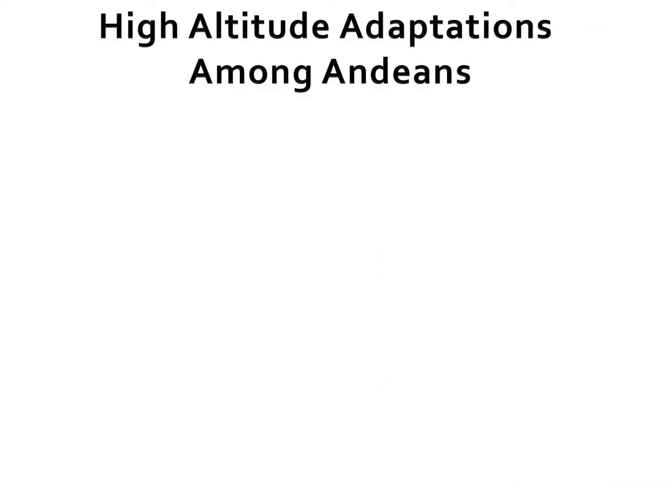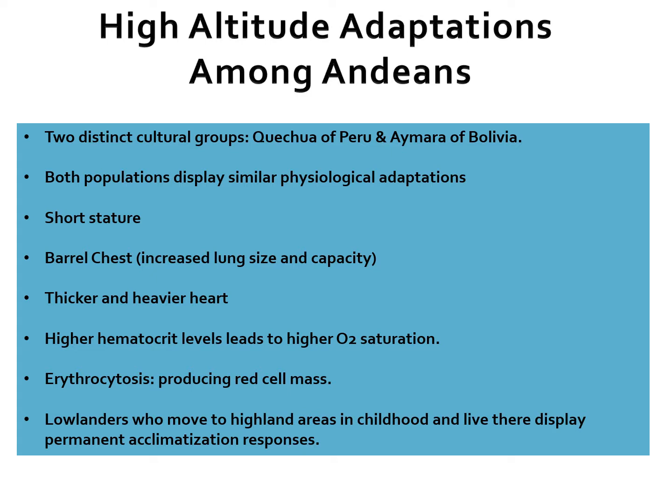High altitude adaptations among Andeans in South America include two distinct cultural groups: the Quechua of Peru and the Aymara of Bolivia. Both populations display similar physiological adaptations — they are short in stature with very large barrel chests, with limbs that seem short and stocky compared to their large midsection. They have increased lung size and capacity, a thicker and heavier heart, higher hematocrit levels leading to higher O2 saturation, and an increased process of erythrocytosis producing larger red cell mass. However, these populations do run the risk of developing chronic mountain sickness.